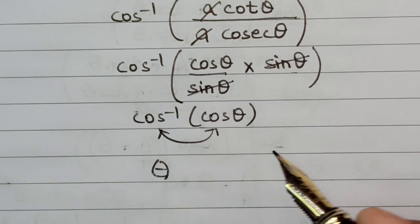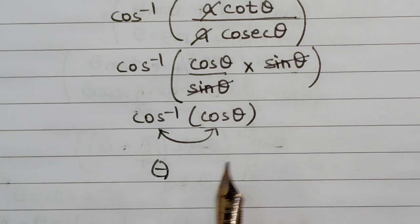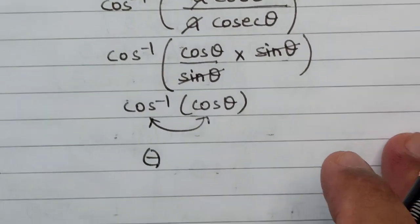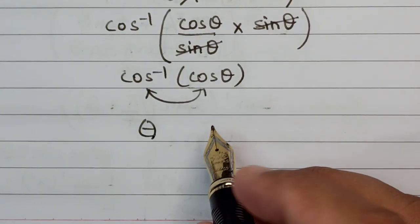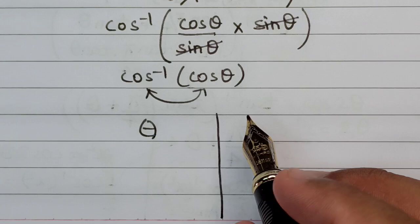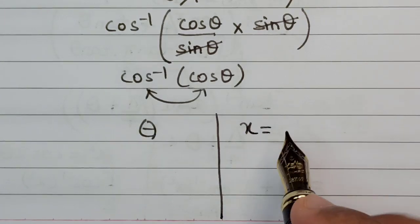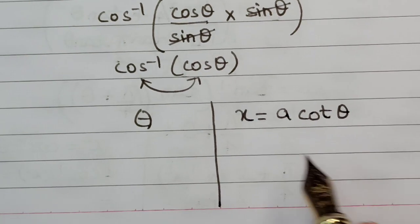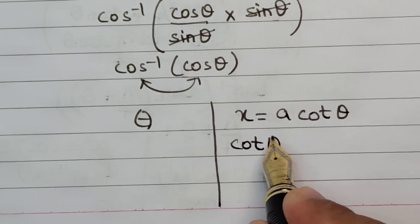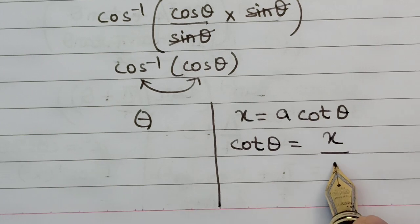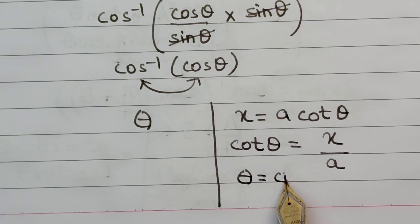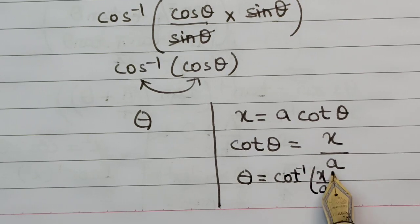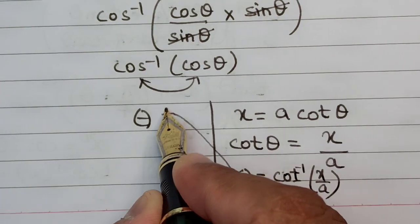So the only thing that we are left with is θ in the last. But this my friend is not the final answer because this θ has been introduced by us; the question was designed in x. So let us go back to where we started, that is x = a cot θ. From here we can calculate the value of cot θ, which is x/a. So that means the value of θ will be cot⁻¹(x/a). So let us substitute the value of θ here.